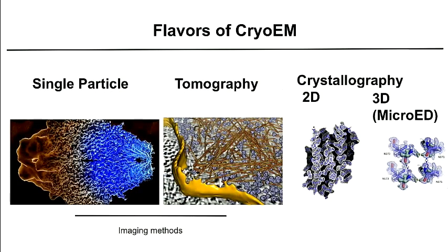I'll first give you the different flavors of cryo-EM. Single particle is a cryo transmission electron microscopy and imaging method in which digitized images of particles are combined to form a representative image with more highly interpretable features and greater signal-to-noise ratio. Tomography is another imaging method in which your sample is rotated and many 2D classes are combined to form a 3D reconstruction.